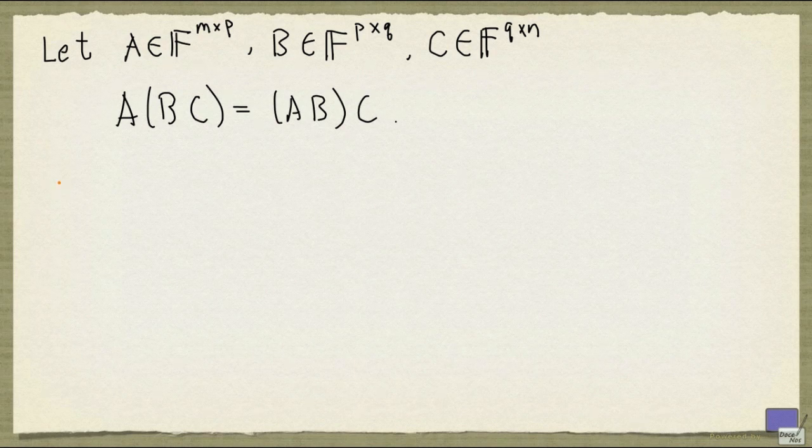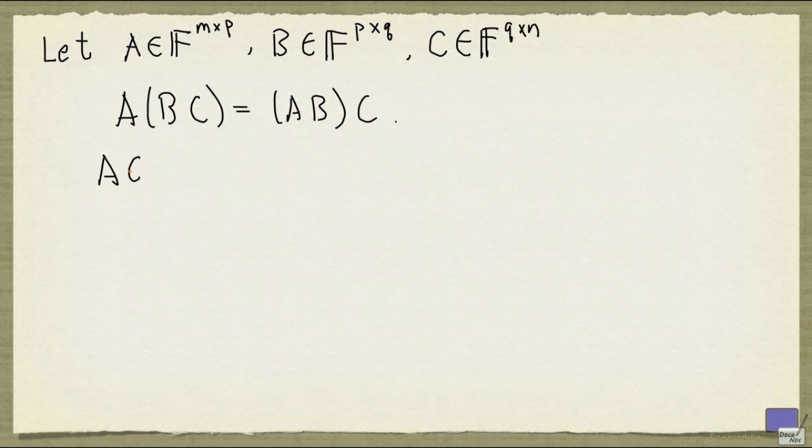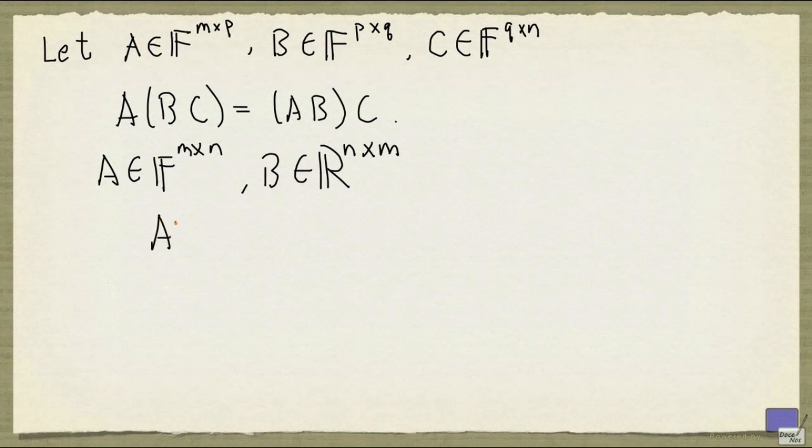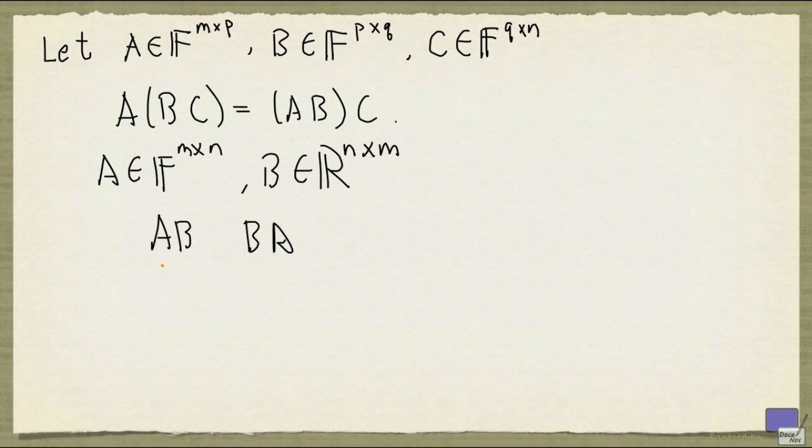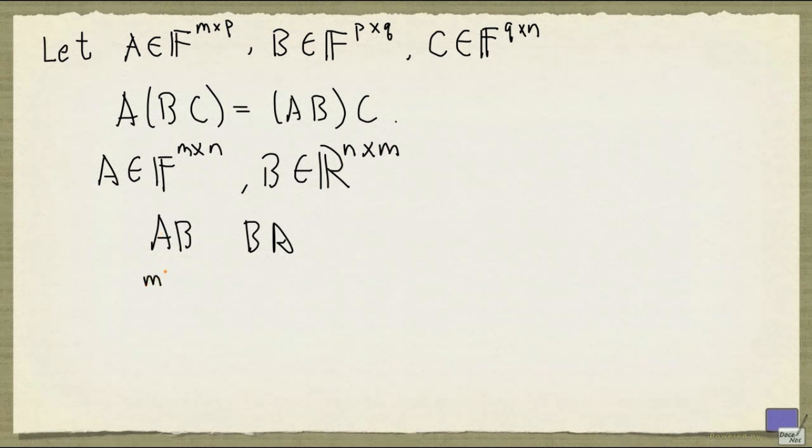Now, commutativity does not hold in general, and we cannot expect it to hold because, for example, if you have two matrices A and B where A is N by N and B is N by M, you can form the products AB and BA. But AB will be N by M and BA will be N by N.